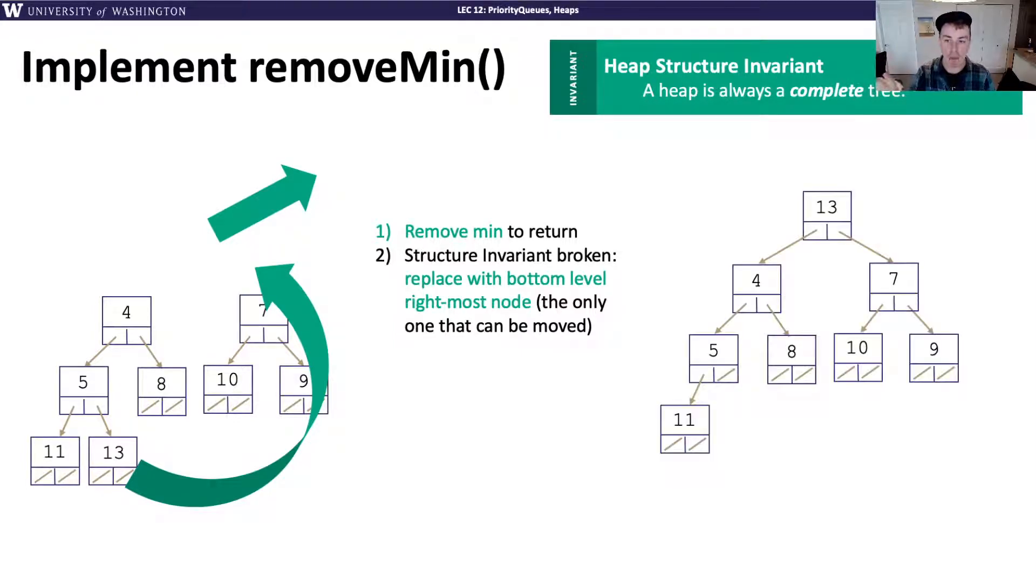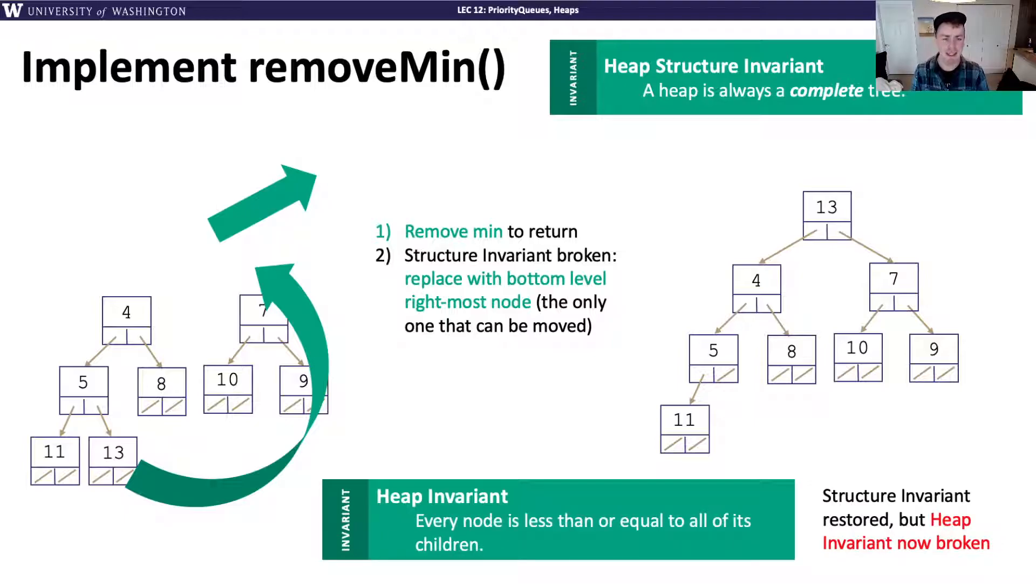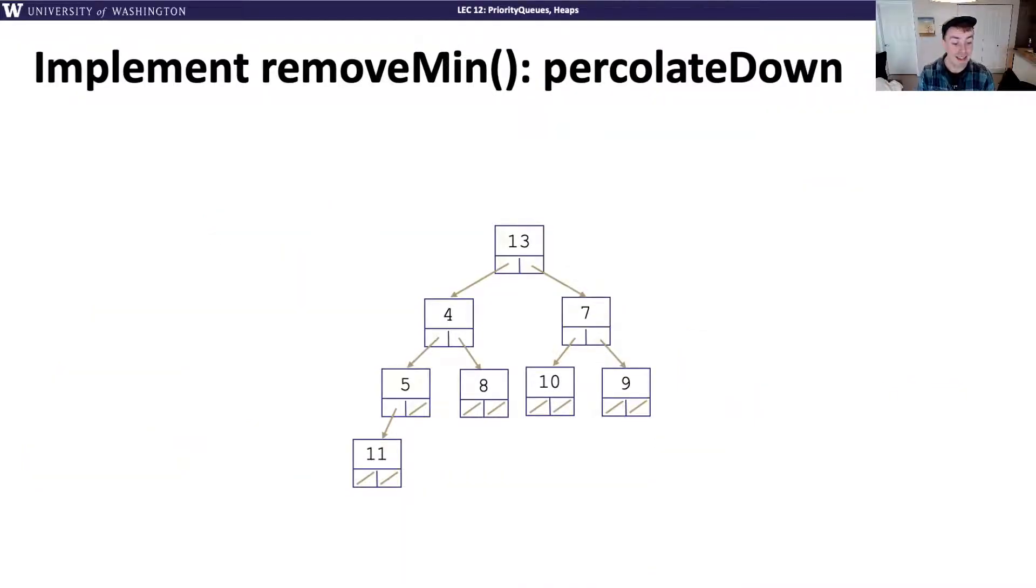You probably can already see a problem here. I don't know if I'm still meeting this heap invariant. Sure, I've satisfied the heap structure invariant. This is a complete tree. The reason we did this was to make sure it was easy to maintain that invariant. But you could probably see here that I have violated the heap invariant. Removing is actually a three-step process. Remove the minimum value, take that node at the bottom to bring it to the top, and then we need to do one more operation to restore the heap invariant. We call this operation percolate down.